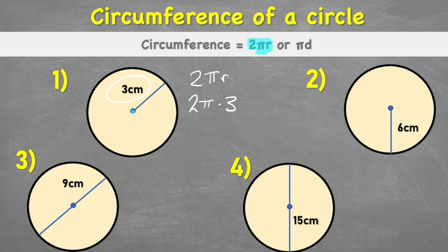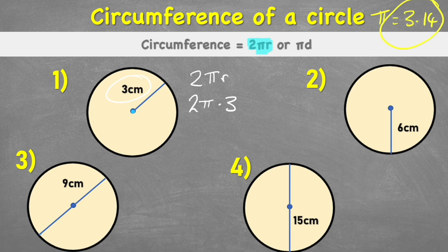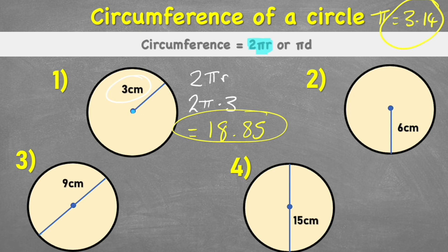We have two options. The easiest is to use the pi button on your calculator, since pi has many decimal places and gives the most accurate answer. If you don't have a calculator, you can use the abbreviated form: pi equals 3.14. In this case I'm using a calculator: two times pi times three, and I get an answer of 18.85.